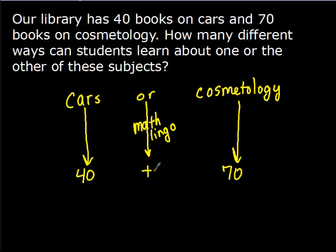So basically this is going to be a rule of sums problem. What it means is when you're looking at one or another of things happening, you add. So you're trying to learn about cars or cosmetology. We take the number of options for cars, add it to the number for cosmetology. If we take 40 and add 70, we get 110. This gives us 110 ways for these students to learn about either cars or cosmetology.